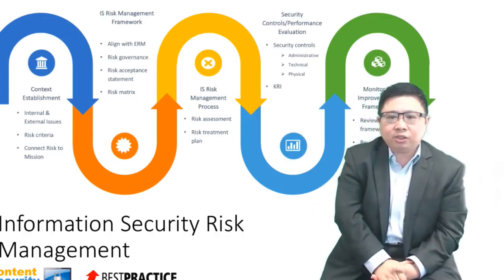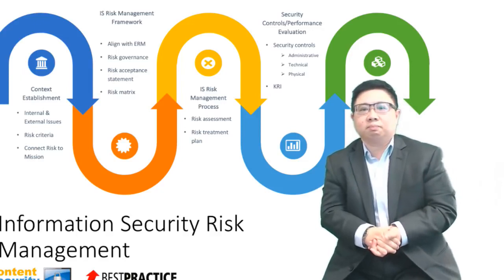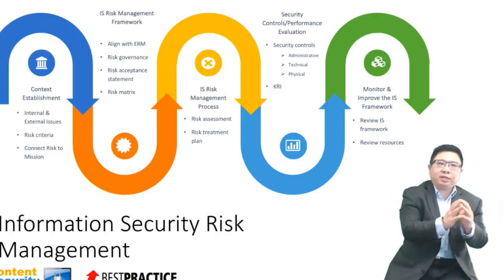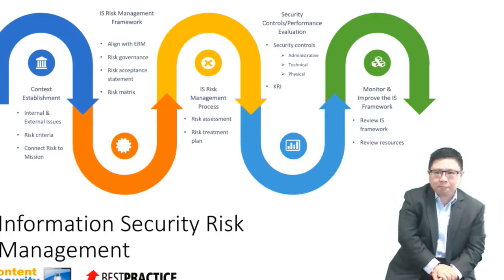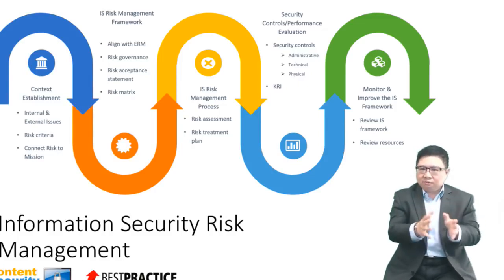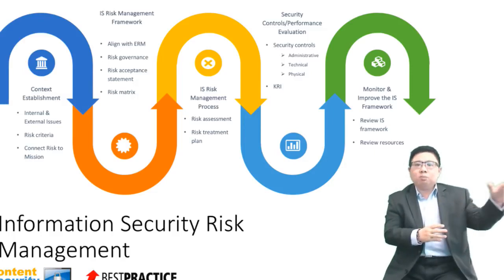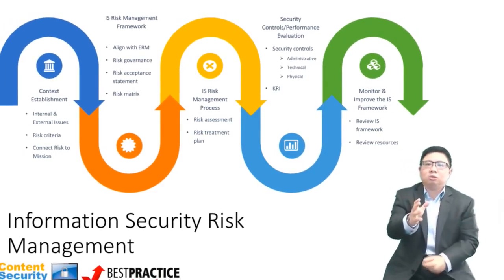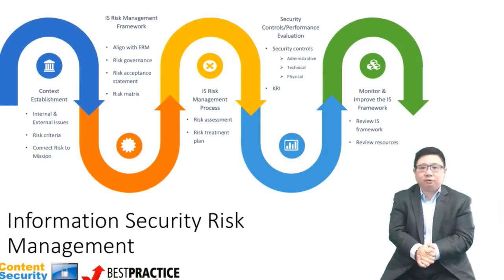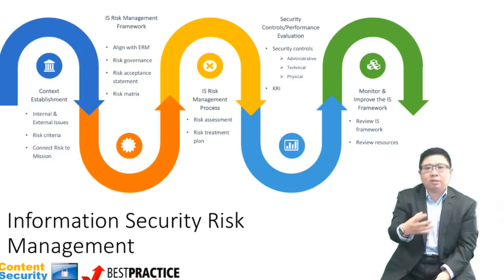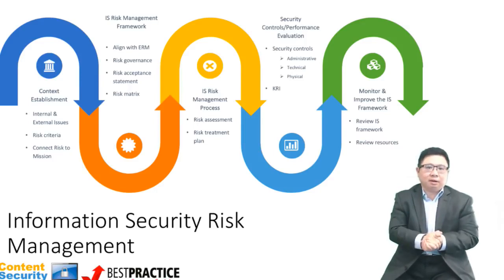From the information security risk management perspective, the very first point is context establishment. You would have noticed that a lot of this would have already been done upfront during the security governance phase, which is why we are able to divide them the way we do. The output from the context establishment flows into this particular phase of information security risk management. Within the risk management framework, aside from alignment to the enterprise risk management framework, we need to have an understanding of risk governance.